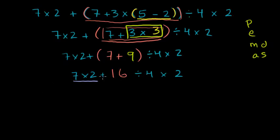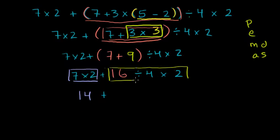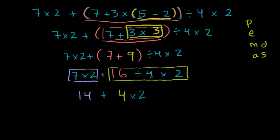We should do multiplication and division next, before we do this addition. So we do 7 times 2 first — that's 14 — and we wait to do the addition. Then here we have 16 divided by 4 times 2. When you have multiple operations at the same level, like division and multiplication, you go left to right. So we do 16 divided by 4 first, which is 4. That gives us 4 times 2, which is the green expression right there.